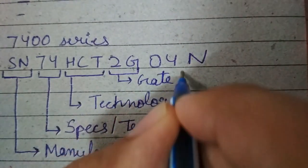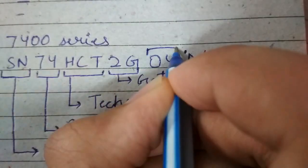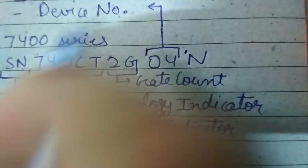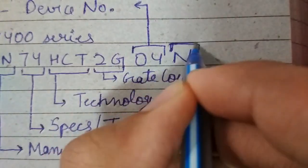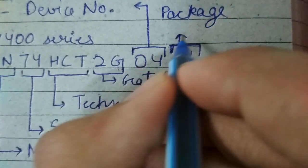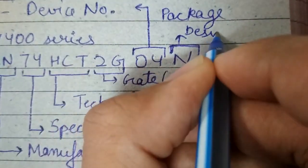2G represents the gate count of the IC. 04 represents the device number, indicating which gate is present on the IC. N at the end represents the package designation of the IC.